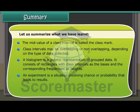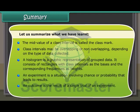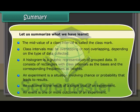An experiment is a situation involving chance or probability that leads to results. An outcome is the result of a single trial of an experiment. An event is one or more outcomes of an experiment.